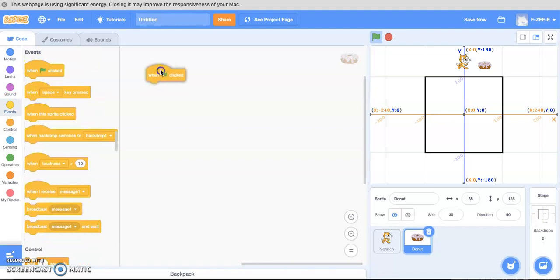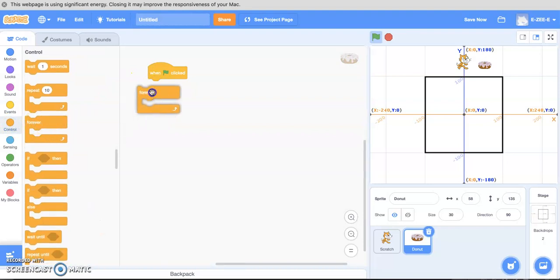First thing we're gonna do is create when game starts. Same as before we're gonna go back and do our forever tag. So do a forever check and once again an if-then statement.